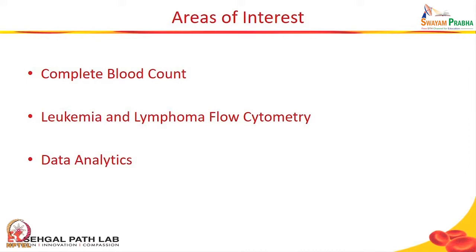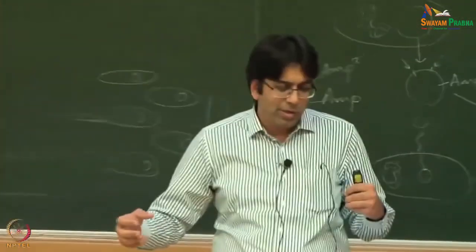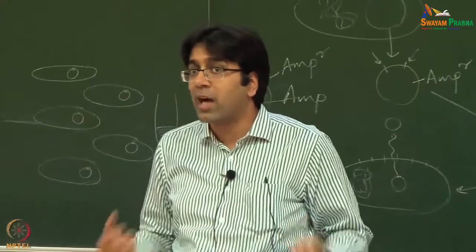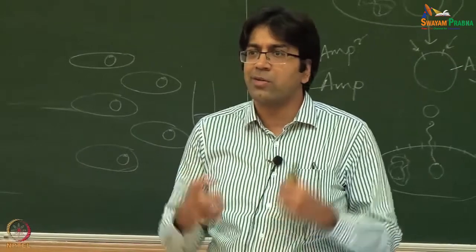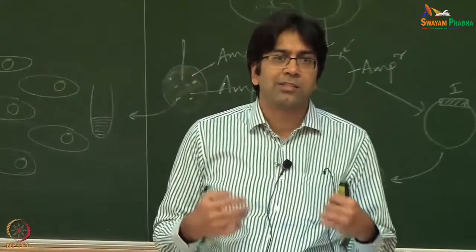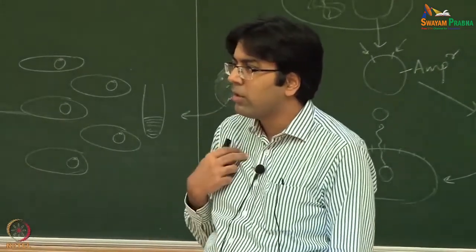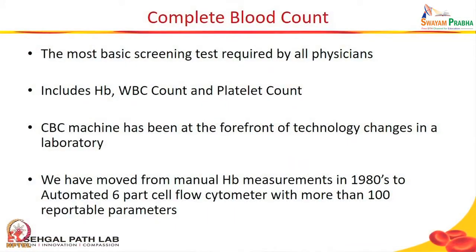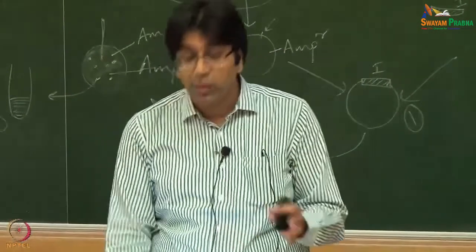Today I am here as a laboratorian, and every doctor will have his or her wish list. I will touch upon two main areas: CBC, which is a routine test done day in and day out — many of you have had your hemoglobin checked — and blood cancer, which is the main area I work on. The CBC machine has been at the forefront of technology change in laboratories. From manual hemoglobin measurement in the 1980s, we went to large floor-based machines, then bench-tops, and now almost desktop-sized machines. My dream would be a portable machine, perhaps in your cell phone — and that is the direction we are progressing.